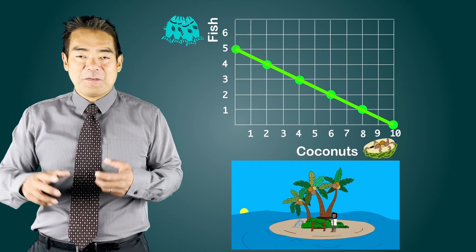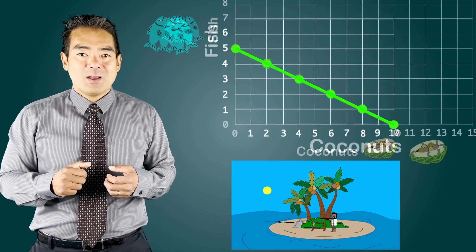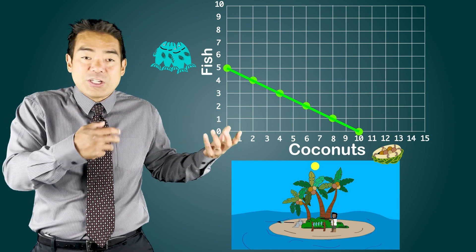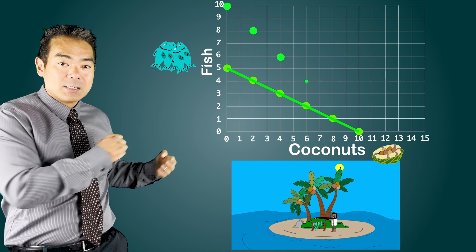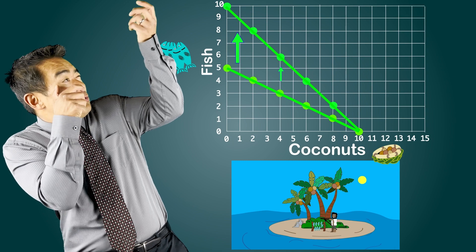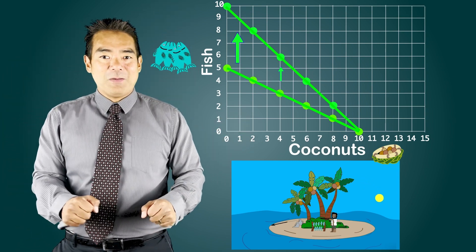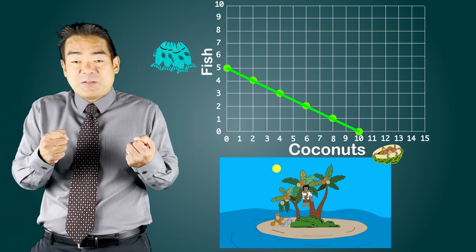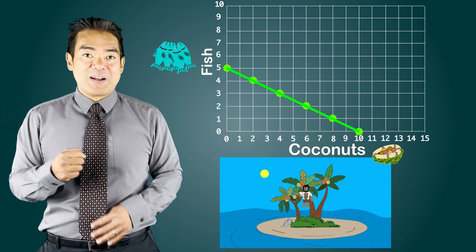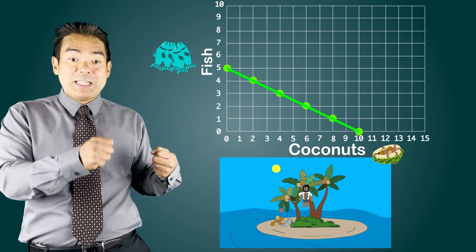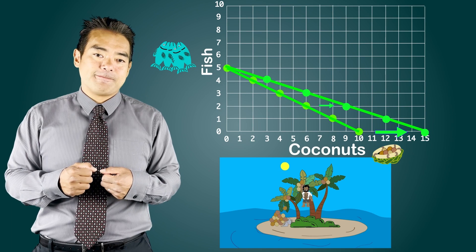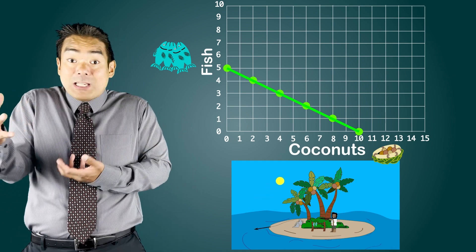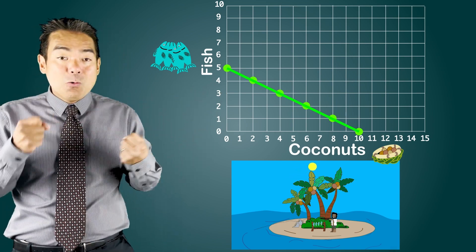What if the castaway fashioned a spear gun instead of using the fishing rod? The spear gun enables him to catch more fish in one day, so the PPC shifts outward on the fish axis. It doesn't really help with coconut collection. What if the castaway works out and becomes super strong, able to leap to the tops of trees and collect coconuts more efficiently? Now he can produce more coconuts, so we see a shift on that axis. And if he has both the spear gun and the strength, he's better at producing both, so we'd see an outward shift of the entire PPC.